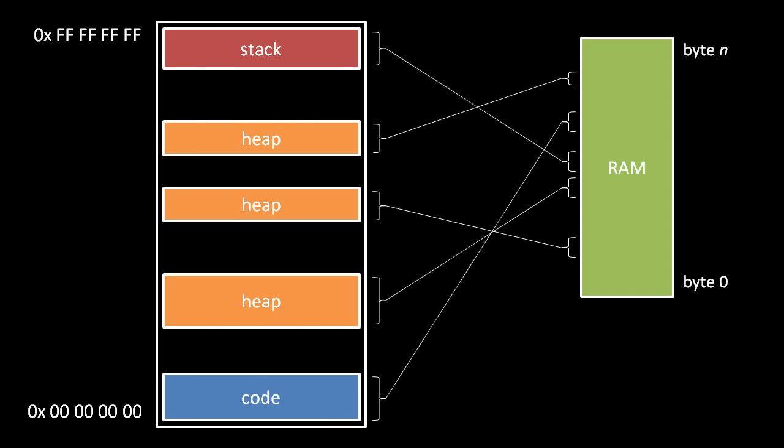For example, the stack is mapped to one area of RAM in the middle, the code is mapped to another non-adjacent area of RAM above it, and the portions of heap are mapped to non-adjacent parts of RAM in a seemingly random order.